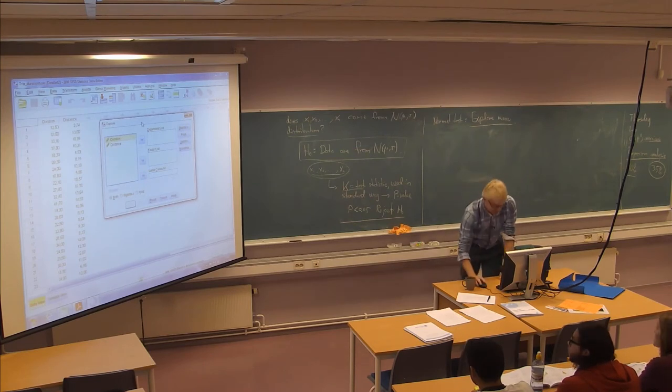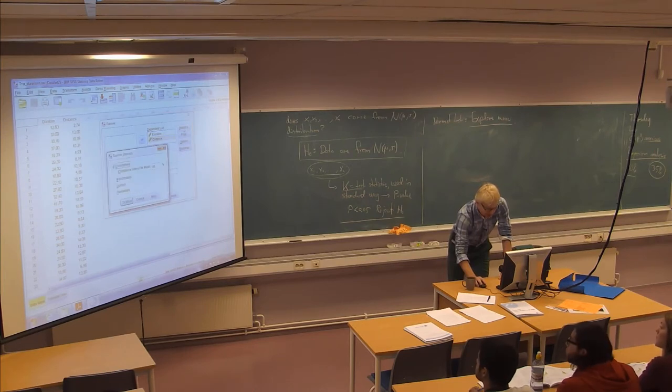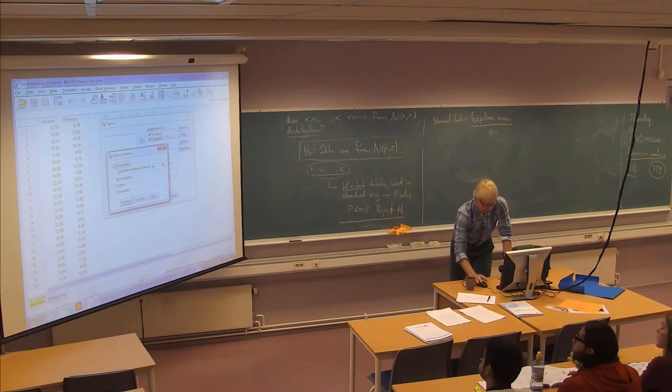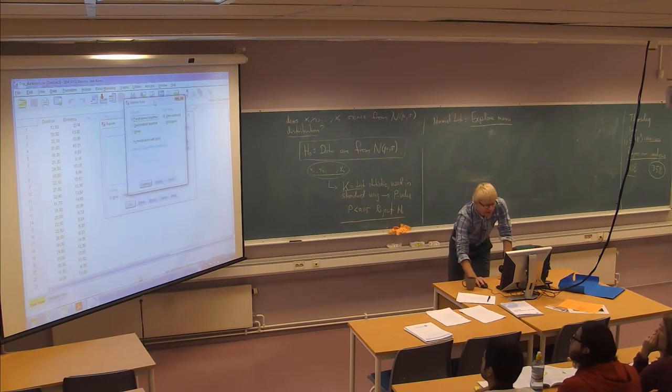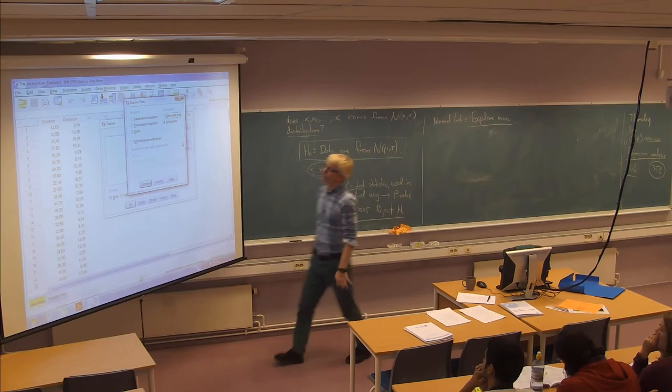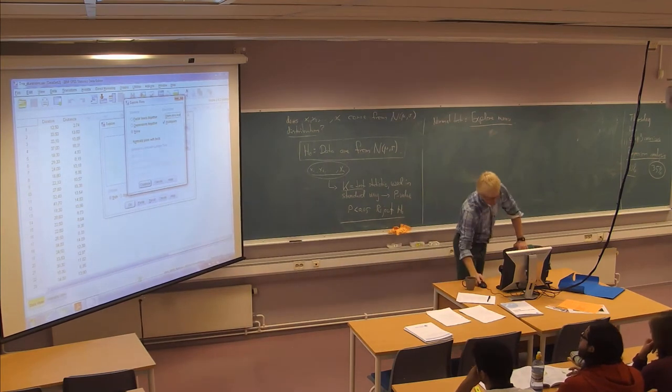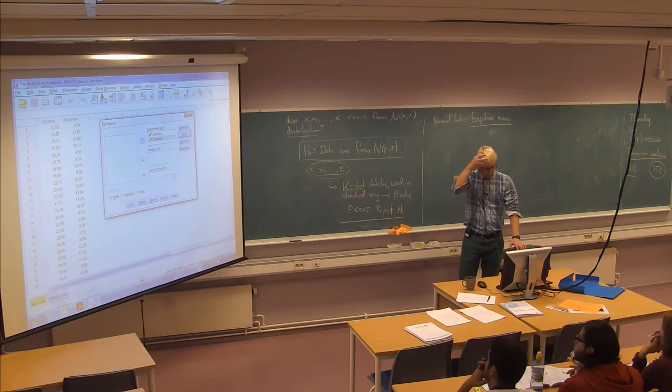In this case we just have two variables here, and no groups that we want to examine. Then we look at statistics. We might want to have these descriptive things, we don't need it exactly now but let's just have it. And then you click plots. You might not want box plots, but I want a histogram and not a stem and leaf for instance. But the more important thing is normality plots with tests here. This is something I want.